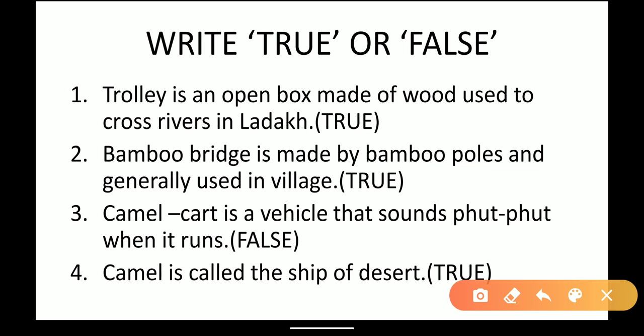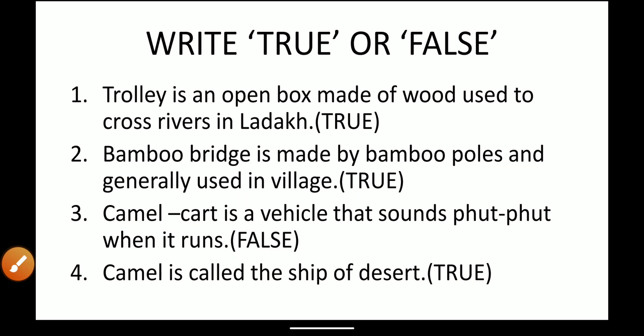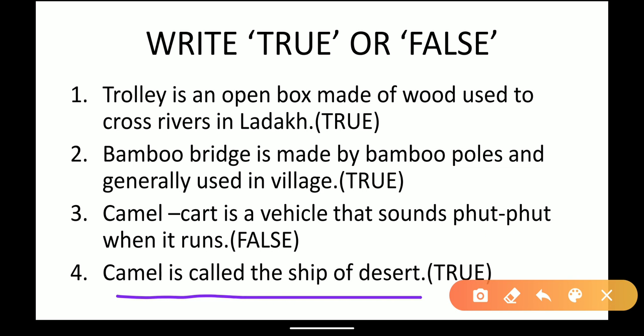Next: camel cart is a vehicle that sounds foot-foot when it runs. As we saw in fill in the blanks, the vehicle that sounds foot-foot is Jugaad, not camel cart. So, the sentence is false. Next: camel is called the ship of the desert. As we all know from earlier classes, camel is called the ship of the desert. So, this sentence is correct and the answer is true.